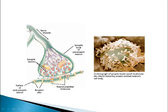What we have is, again, an axon terminal and a synaptic knob. Now, inside the synaptic knob, we have what are called synaptic vesicles — V-E-S-I-C-L-E-S — vesicles.